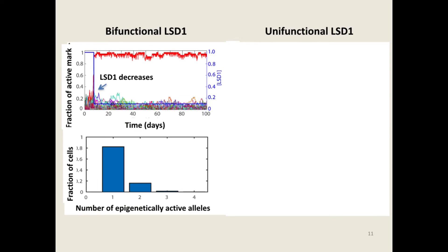Now let's examine the differentiation step. Here shows typical trajectories of the 100 alleles in one cell. All start with H3K9 trimethylation dominated. One allele gains active marks and becomes H3K4 trimethylation dominated, elicits a negative feedback loop, and the LSD1 level drops. This allele remains active and others remain repressive for the remaining time. Notice that throughout time, most alleles just fluctuate around the repressed mark dominant state. Sampling over a thousand cells shows that most of the time only one allele is activated, seldom two, very rarely three.